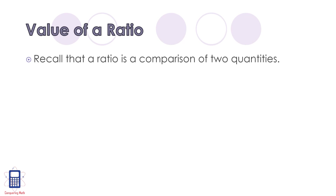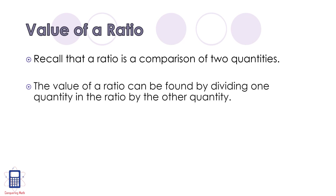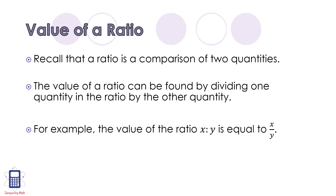So remember that a ratio is a comparison of two quantities. To find the value of a ratio, we just need to divide one quantity in the ratio by the other quantity. For example, the value of the ratio x to y is equal to x over y, or x divided by y.